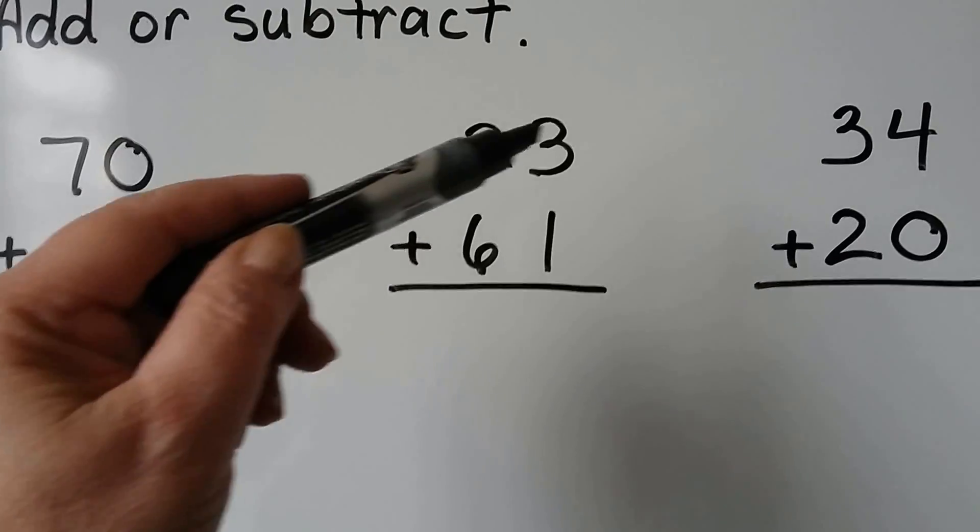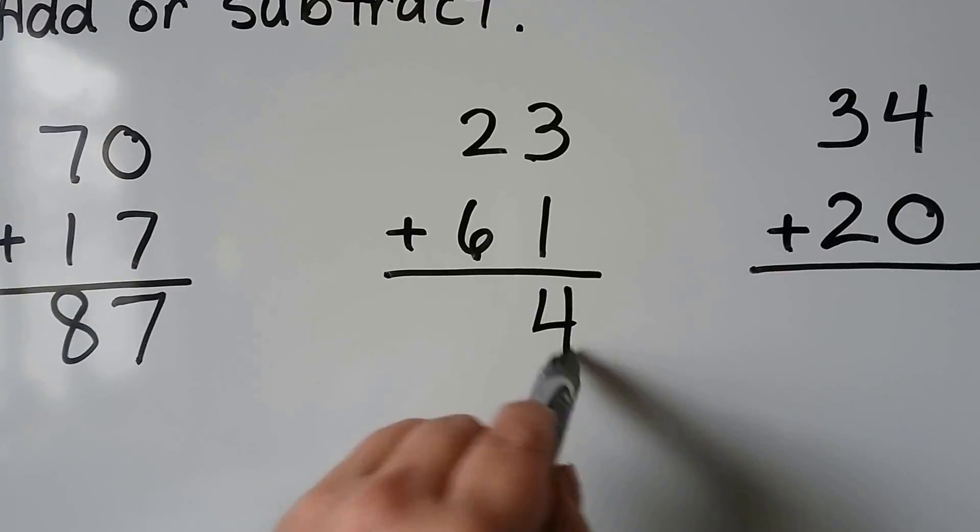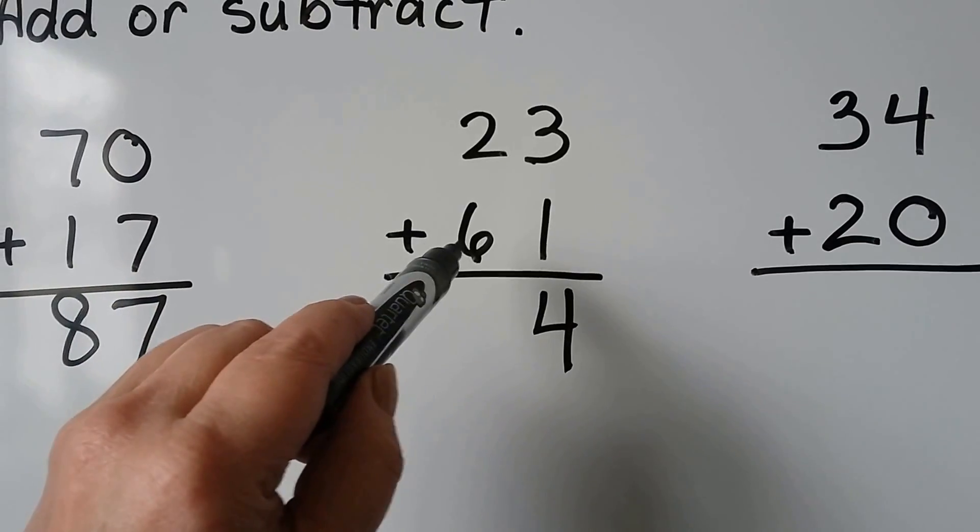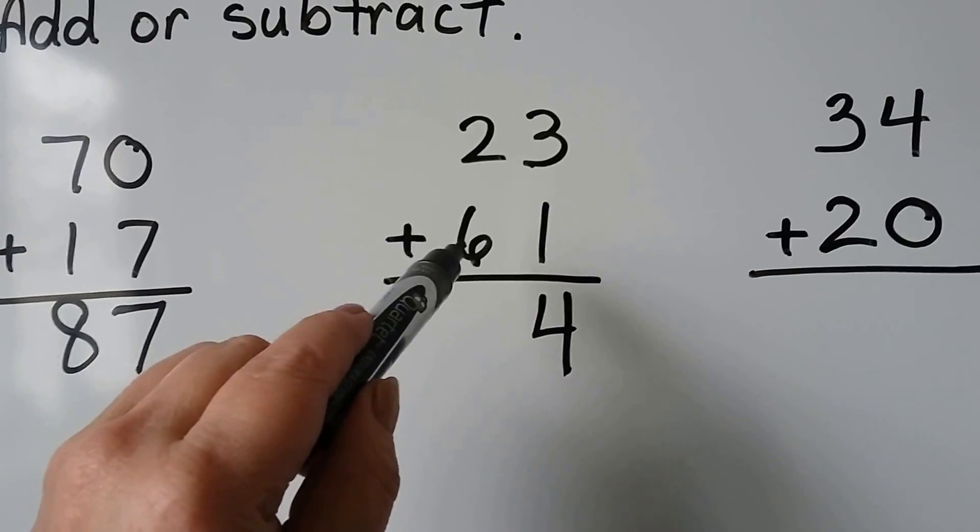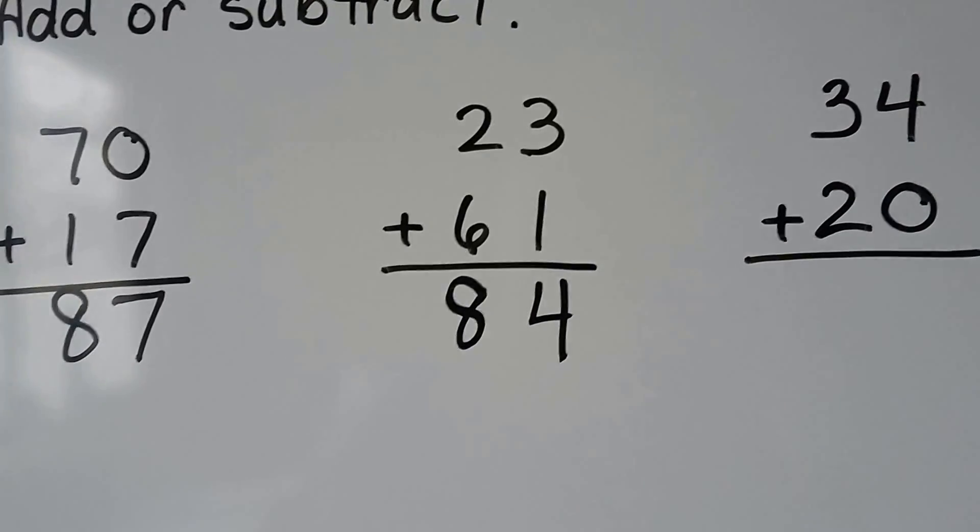Let's try this one. 3 plus 1. That's 3 and 1 more. That makes a 4. 2 plus 6. We start with the larger number, 6, and count on 2. 6, 7, 8. That's equal to 84.